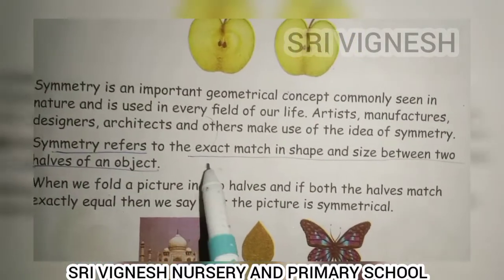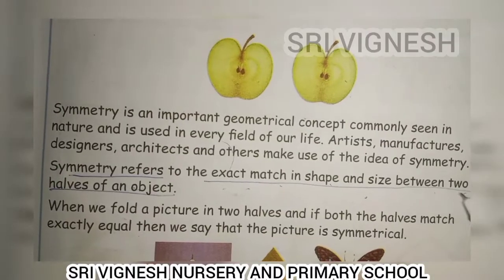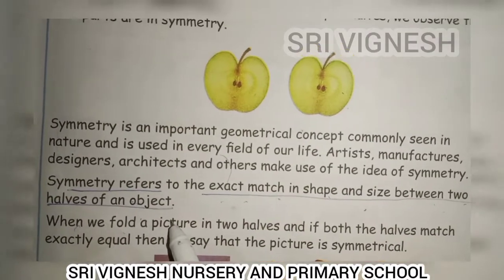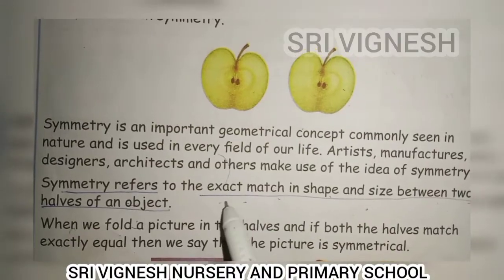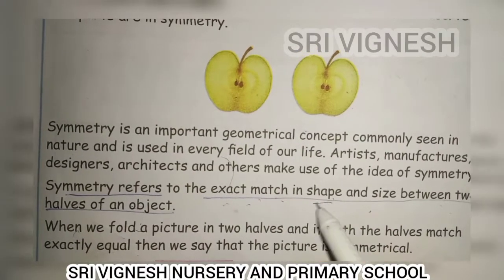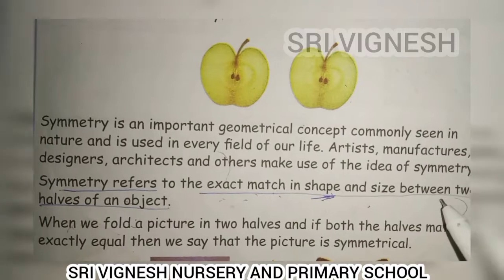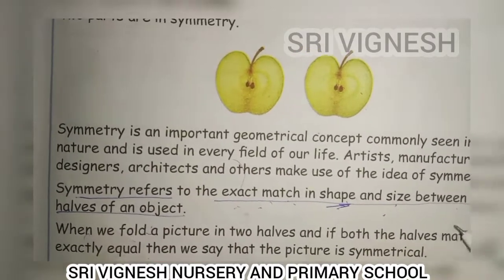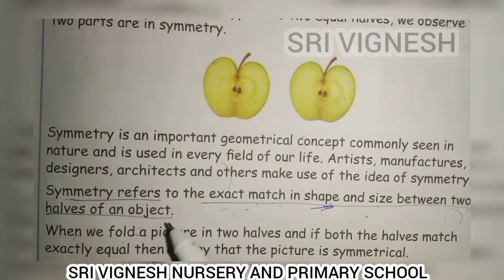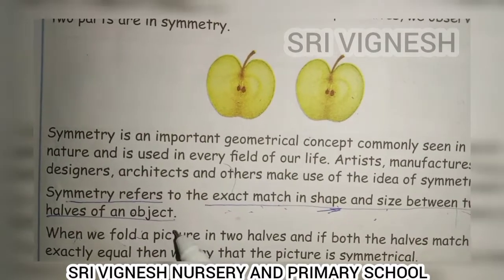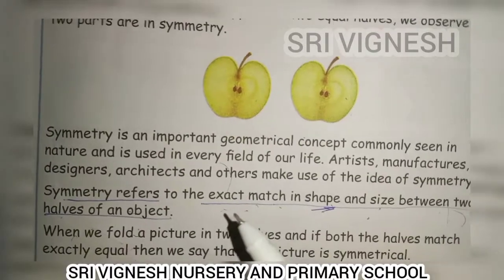Symmetry refers to the exact match in shape and size between two halves of an object. This is symmetry — the same on both sides. Between the halves of an object, because this is one side, if we put a line in the middle, we put two halves as equal apart.